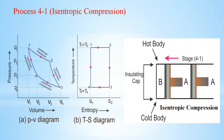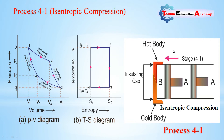Process 4 to 1: the cylinder head again becomes a perfect insulator — the insulating cap is reapplied, so the cylinder head will not reject heat to the surroundings. There is no heat transfer because this is an isentropic (reversible adiabatic) compression process. The system neither receives nor rejects heat, and compression continues adiabatically and reversibly.